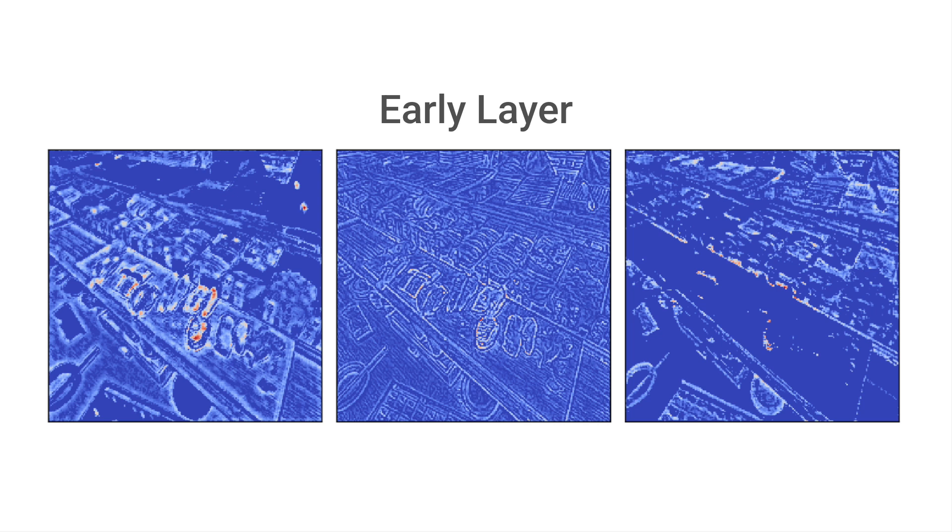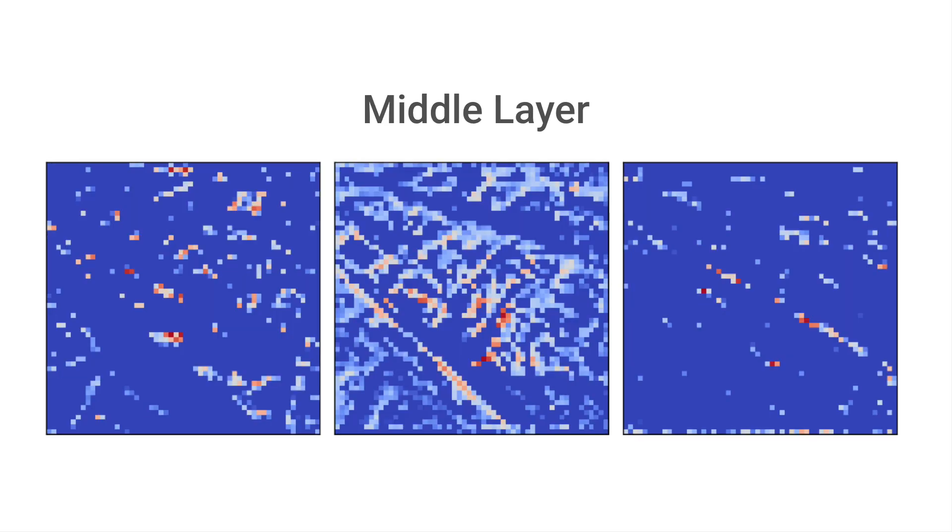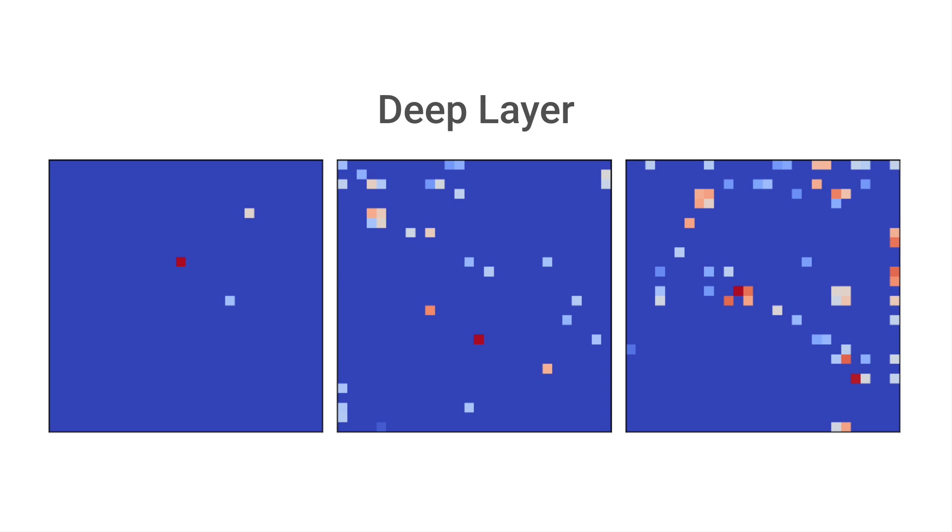Convolutional neural networks make decisions using complex feature hierarchies. It's difficult to unveil these using methods like occlusion, SHAP, or GradCAM, as these focus on regions of important pixels. Guided backpropagation addresses this by visualizing specific features that have contributed to a model's output. It does this by adjusting the standard backpropagation process to only pass positive gradients that have contributed to a prediction.